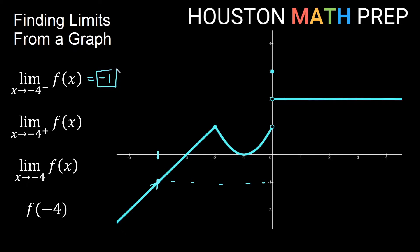If we look at the second one, approaching from the positive side, we're approaching this point from the other direction — still approaching a y value of negative 1. From both sides we get the same value, and that tells us the limit exists. So the overall limit as x approaches negative 4 is negative 1.